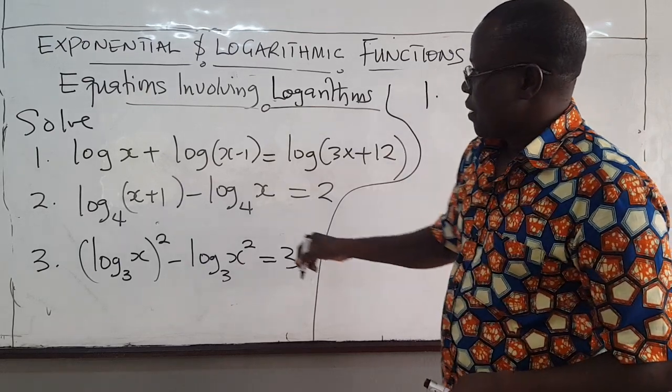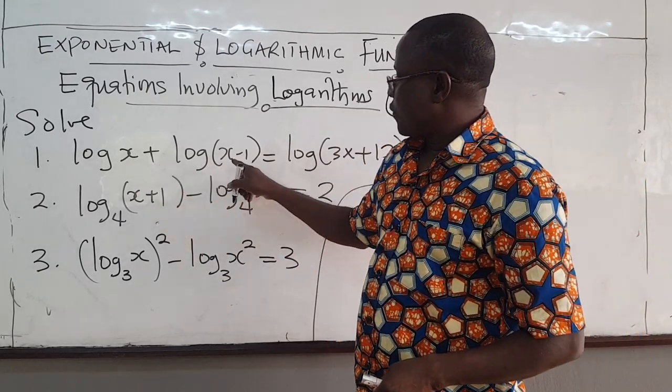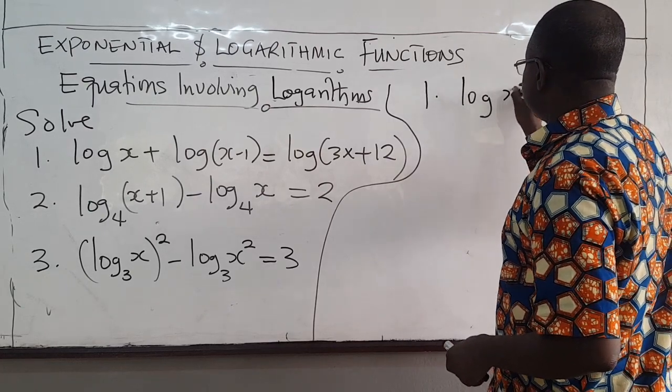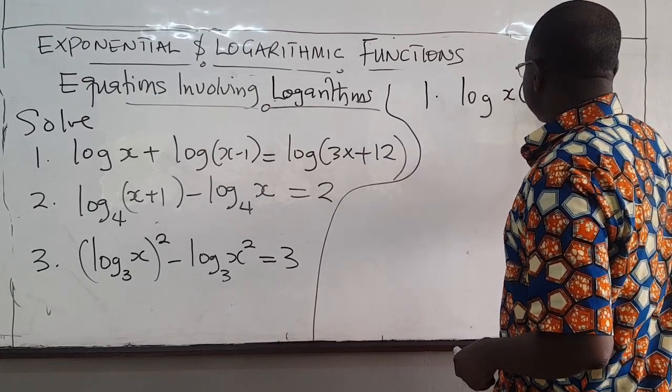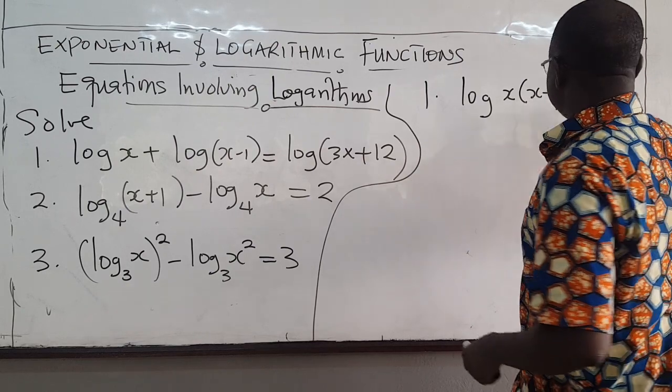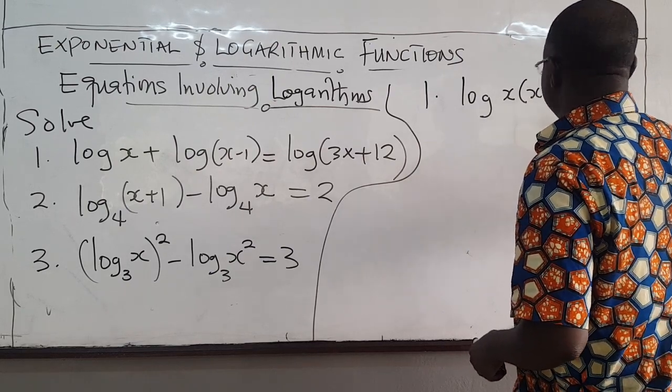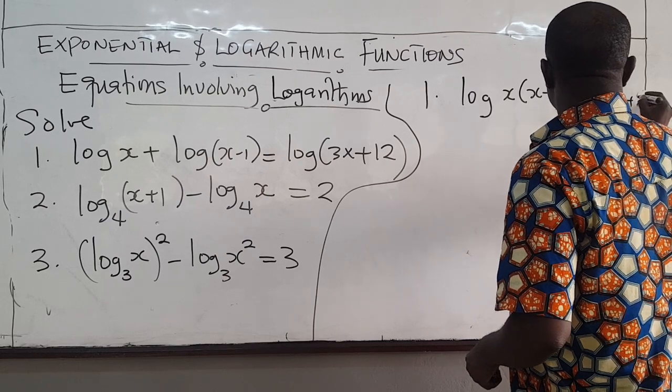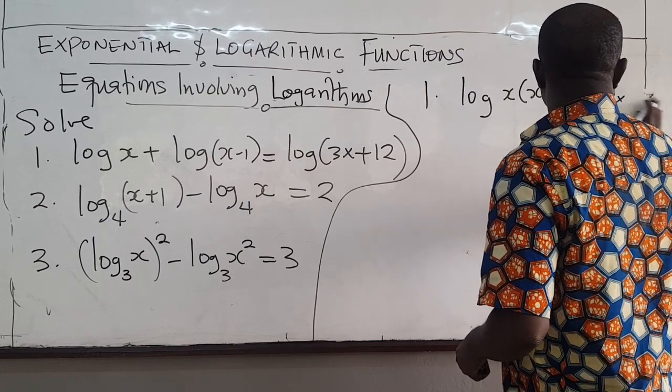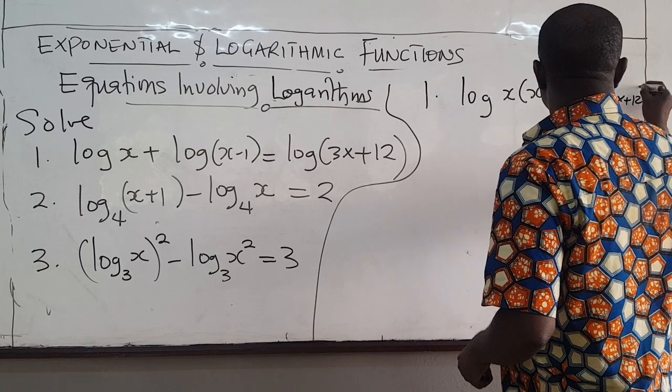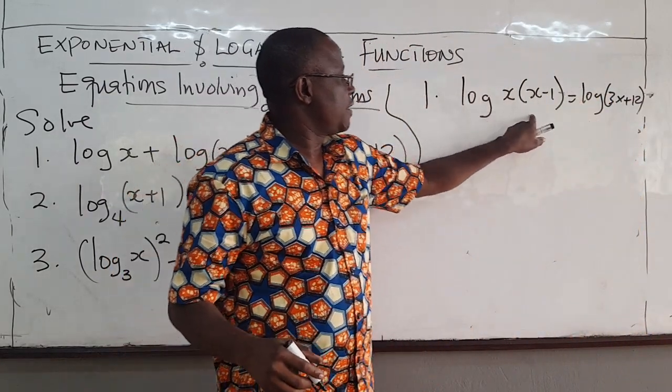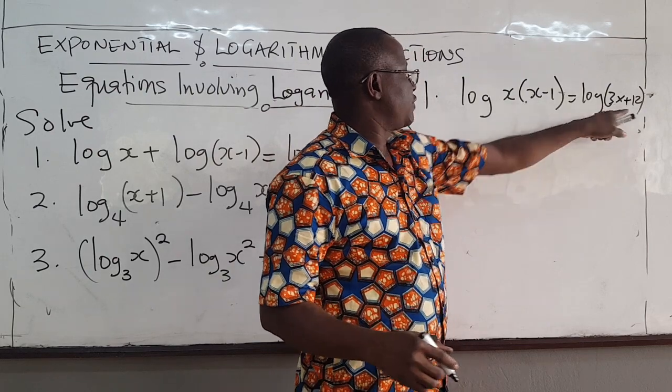Solved for x. We can combine these guys. So for question 1, log x plus log of x minus 1 is log of x times x minus 1, and that is equal to log of 3x plus 12. So you have a log of something equal to a log of that, so they have to be equal.